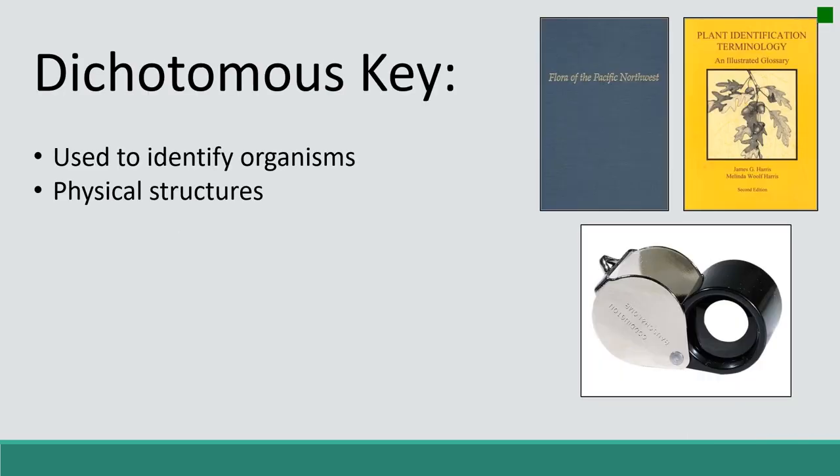Here's an example of a dichotomous key — the flora of the Pacific Northwest. It's one that we use at the University of Idaho. There are also different floras for different geographical regions, so check them out. But basically, a dichotomous key is used to identify different organisms. Dichotomous keys allow us to compare, communicate, order, and categorize different organisms so we can identify what things are and understand how we're going to manage that landscape.